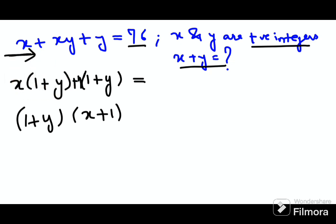So now, if I want (1 + y), if I want this bracket over here, what you should do is your entire question then changes to - you just add 1 on both the sides: x + xy + y + 1 = 76 + 1, which will give you 77.